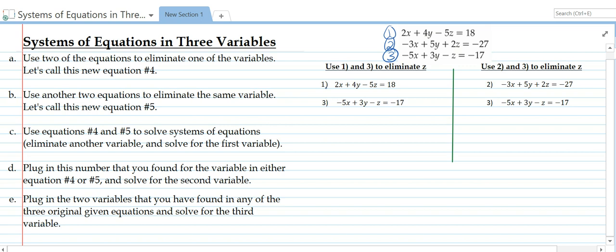So we choose equations 1 and 3 to eliminate z. We do that by multiplying equation 3 by negative 5. This way the coefficients of z will be negative 5 and positive 5. We want the coefficients to be the same except for different signs. So if their signs are different and the coefficients are opposite numbers, then when we add them they're going to cancel out and become zero. They will eliminate.